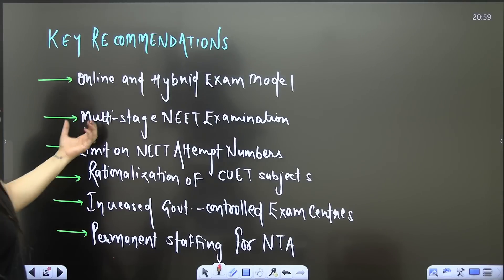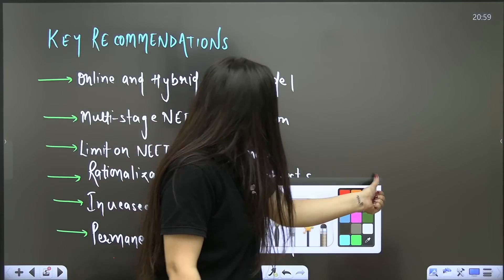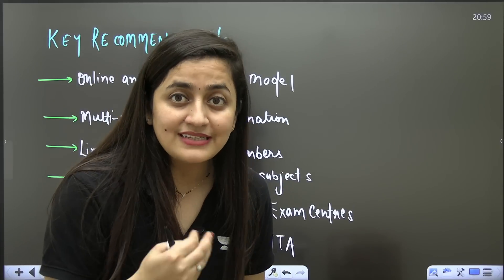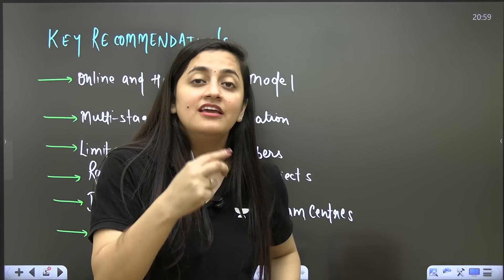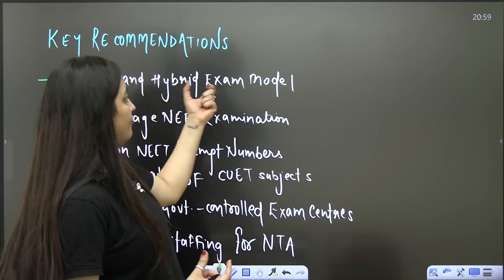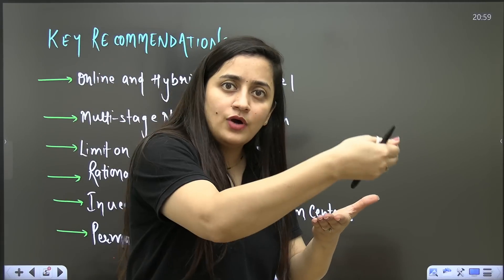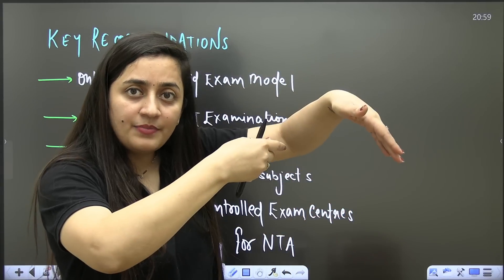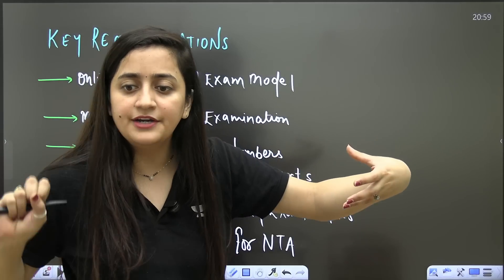Online and hybrid exam model. When we talk about the online exam model, the chances of scam or leak are very, very less. If we cannot do it because the number of aspirants is too much, we can go for the hybrid exam model. Papers should be sent digitally, and the NTA will send the paper digitally to that particular center and students just need to answer it on the OMR sheet. That is the hybrid model.